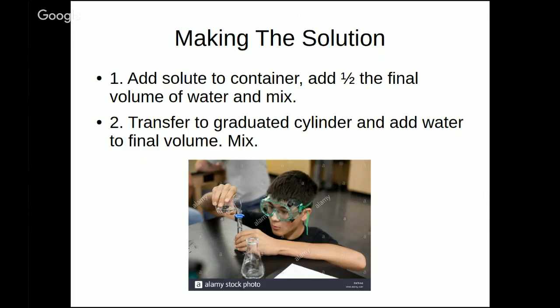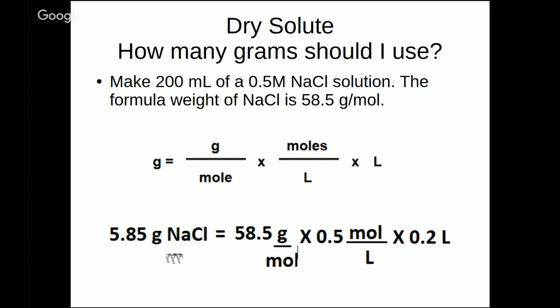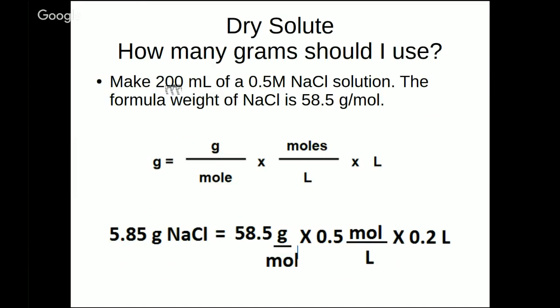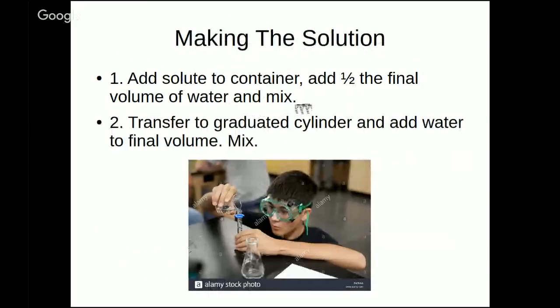Now I've done the math. How do I actually make the solution? Well, the first thing you're going to do is you're going to measure out your salt. In this case, I'm going to measure out 5.85 grams of my salt. I'm going to put that into some kind of container. And to that salt, I'm going to add water. And I'm going to add about half the final volume of water. So in this problem, I wanted to make 200 mL. I'm going to add about 100 mL of water to the container and mix it. This just gets it started dissolving before you're up to your final volume.